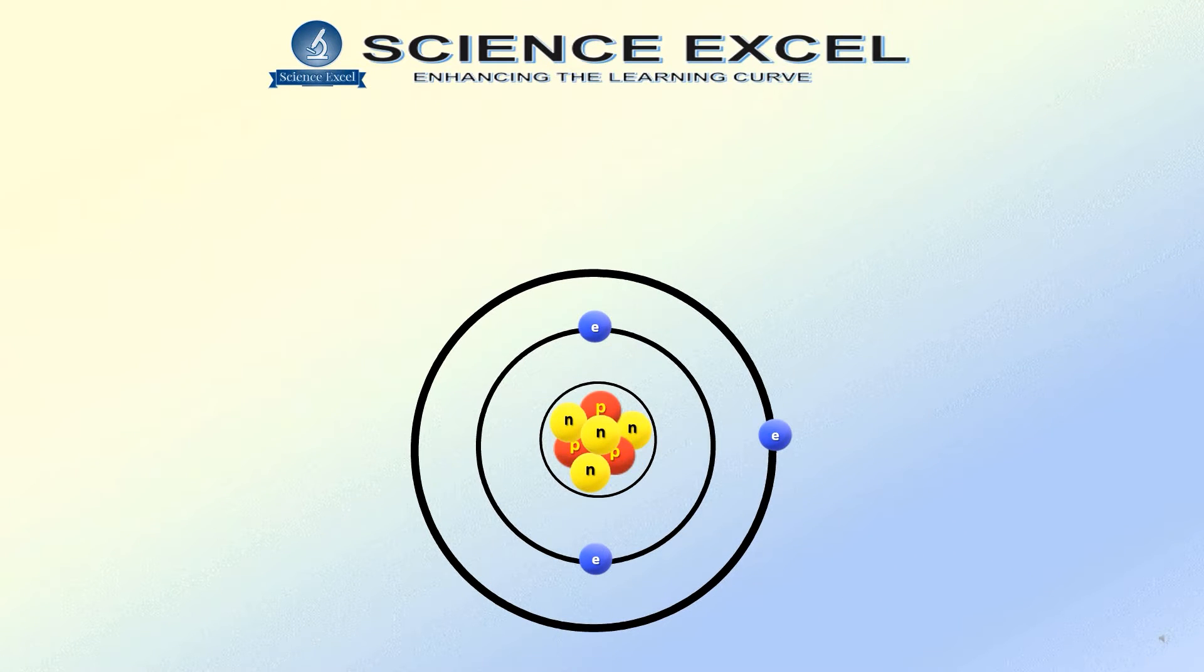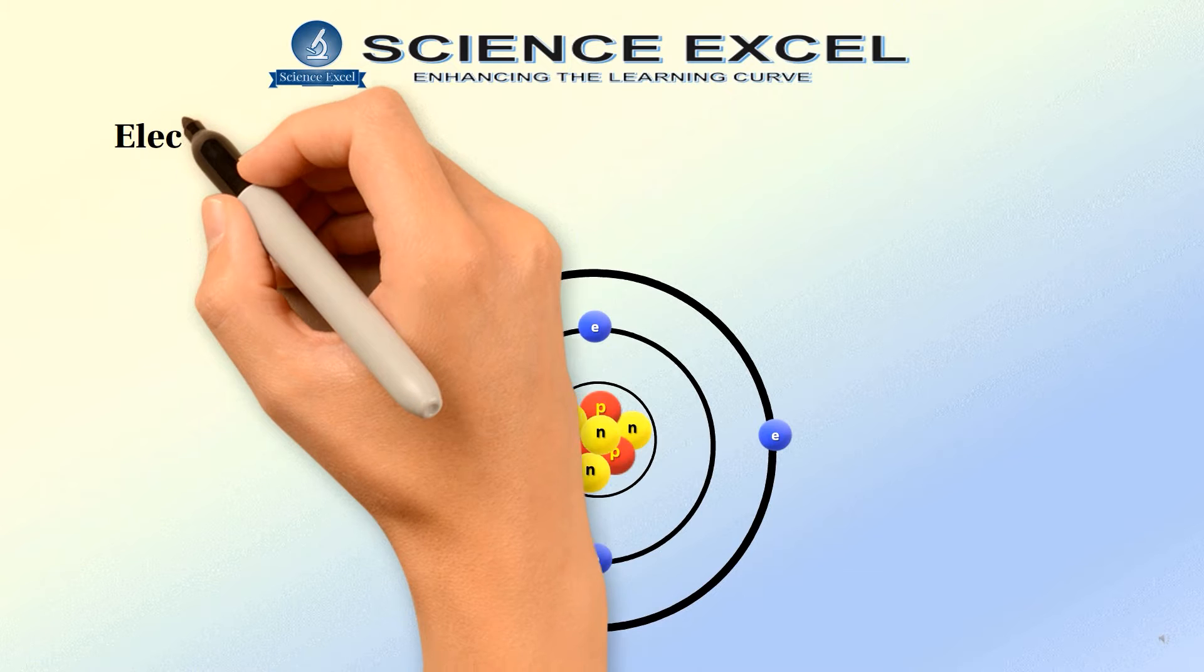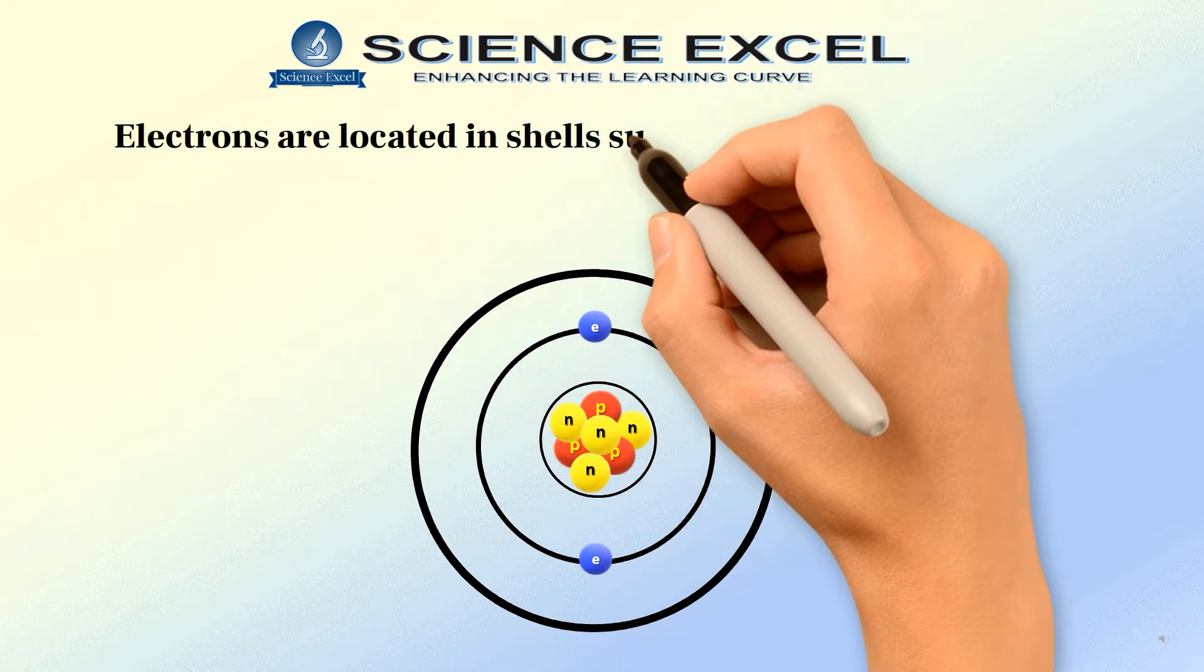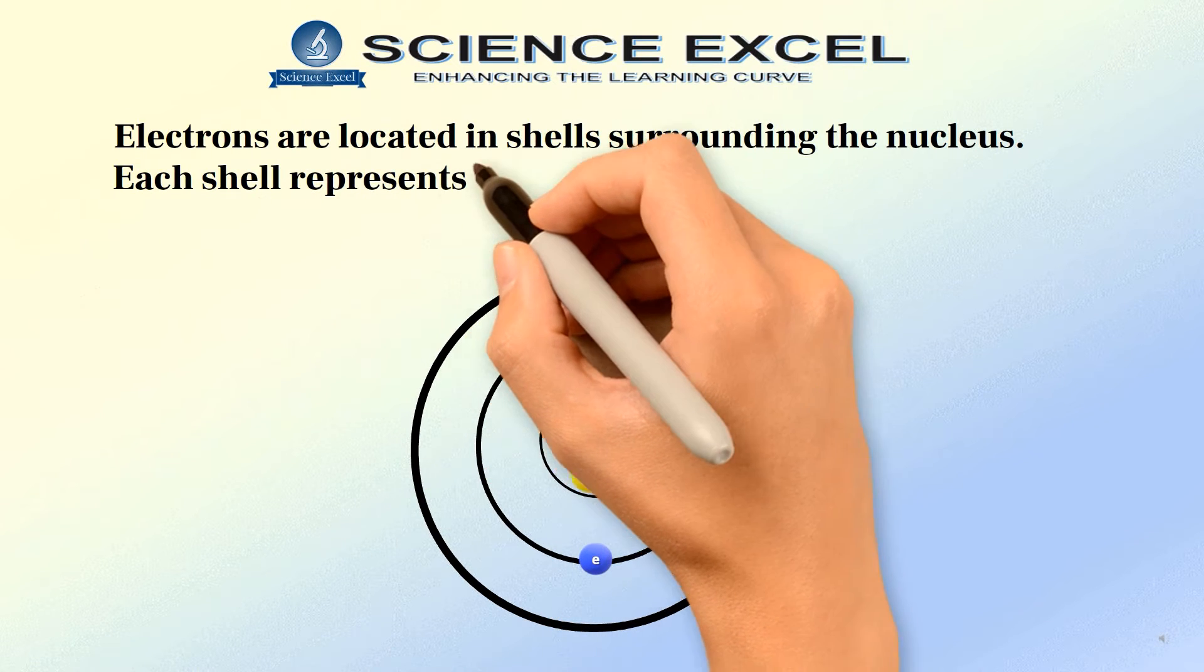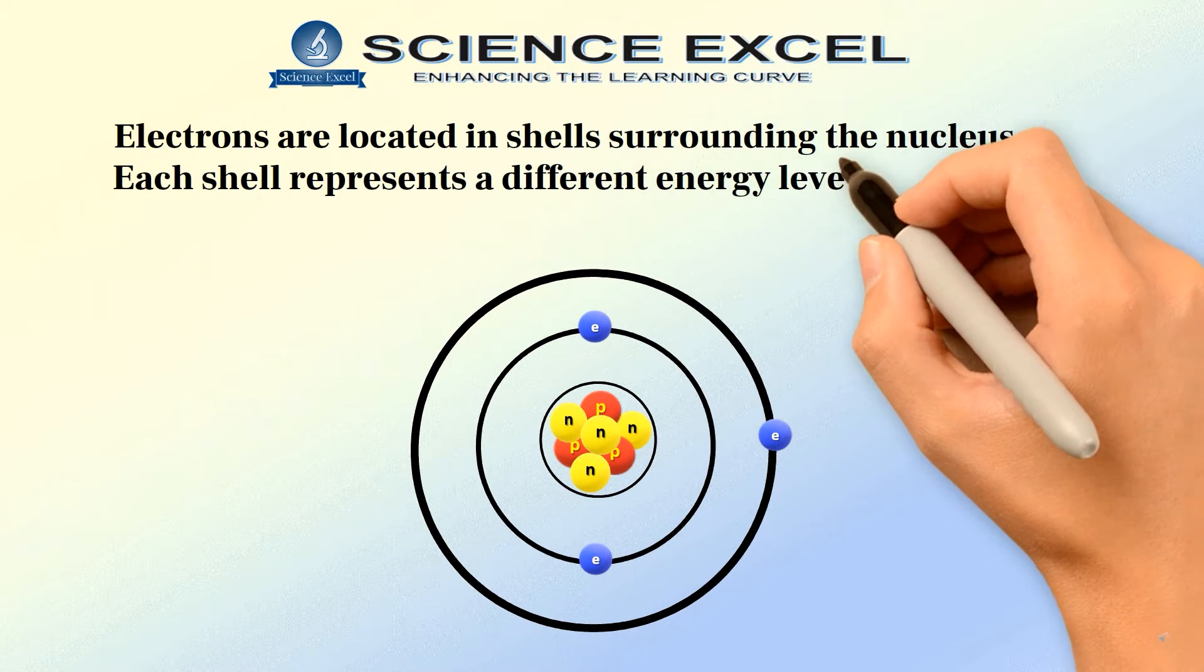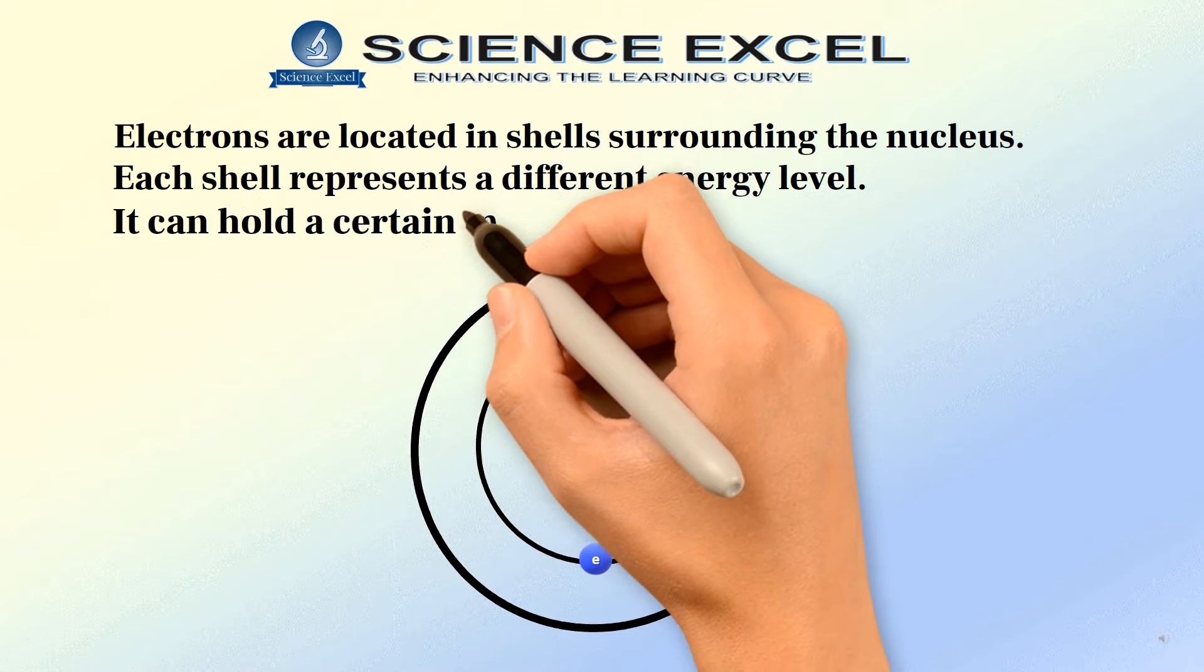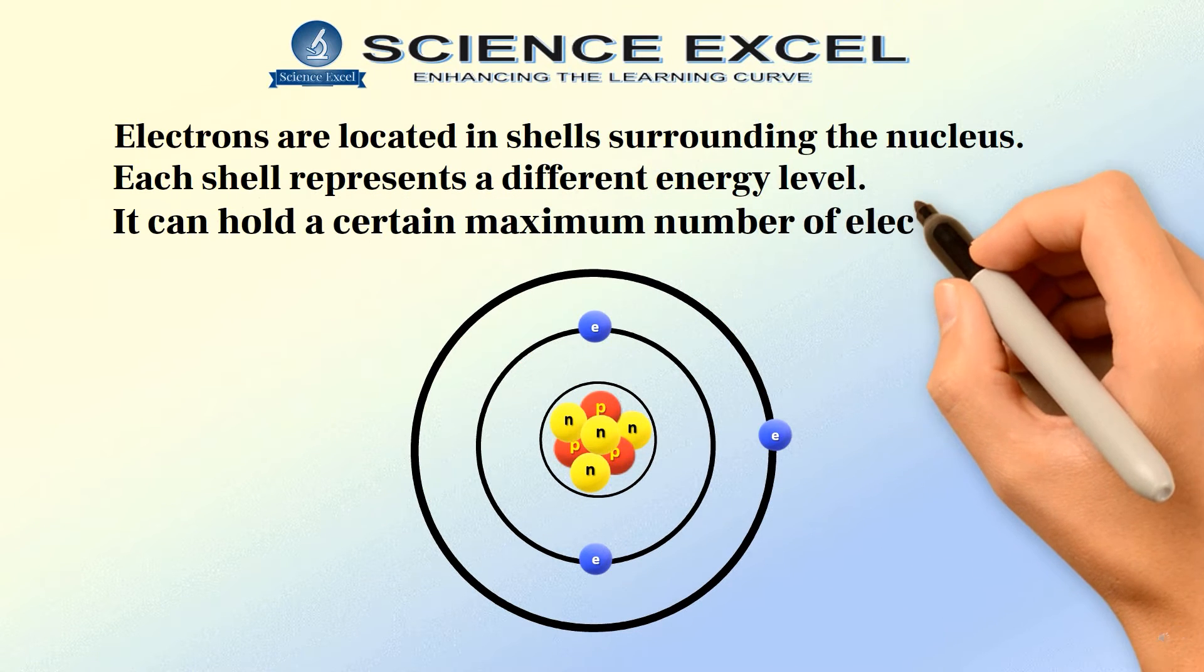Now let's understand the different orbits or shells in an atom. We can see the electrons are located in simple rings or shells surrounding the nucleus. Each shell represents a different energy level and it can only hold a certain maximum number of electrons.